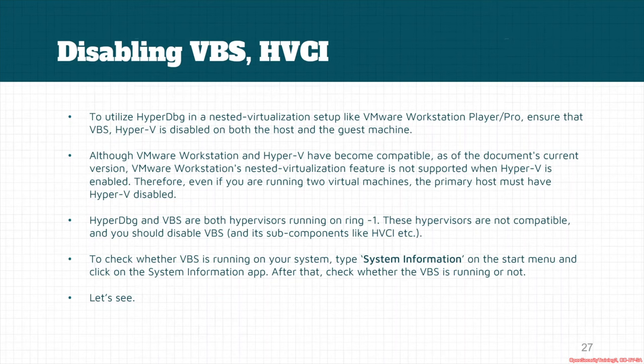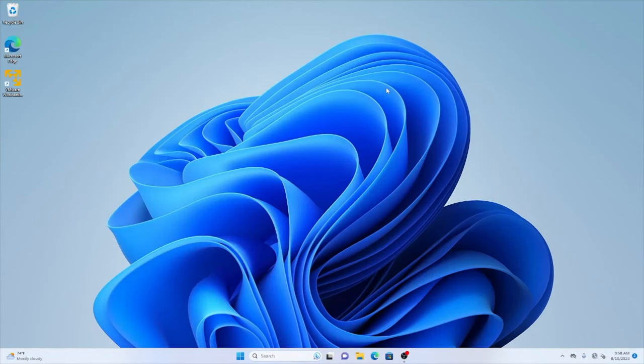If we want to check whether VBS is running or not, or whether Hyper-V is running, we have to use System Information from the Start menu and click on that app to check whether VBS is running or not. Let's see an example.